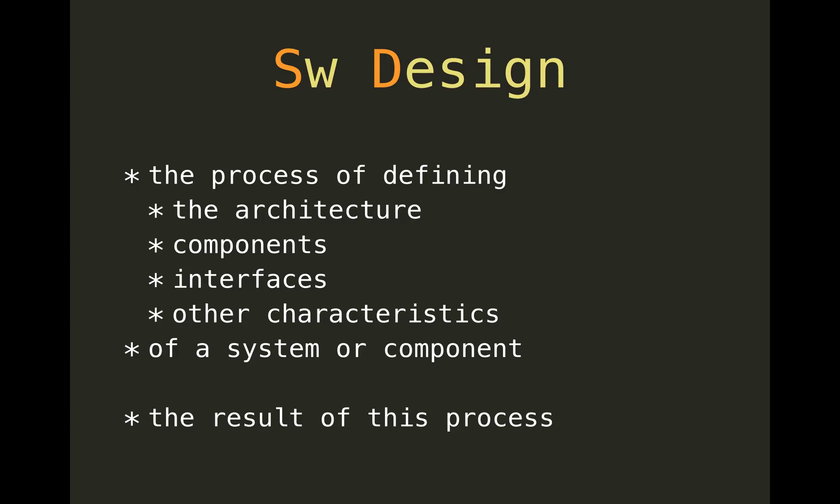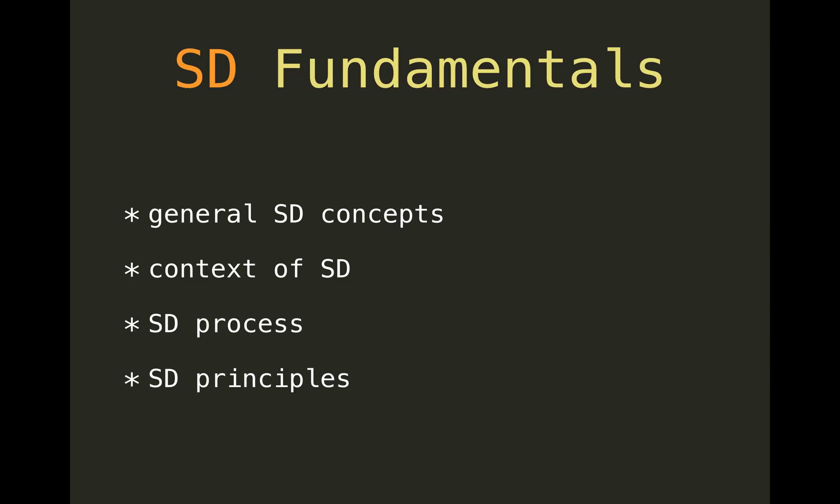Software design is separated into several sub-areas. The first one is fundamentals. The general concept is that it's a problem-solving activity — it's the first step from the problem to a solution. The context is how it fits into the entire system. The process covers high-level software design, where you design the architecture of the entire thing, or low-level design, where you design a component. Software design principles include things like abstraction, encapsulation, separation of concerns, coupling and cohesion, and so on.